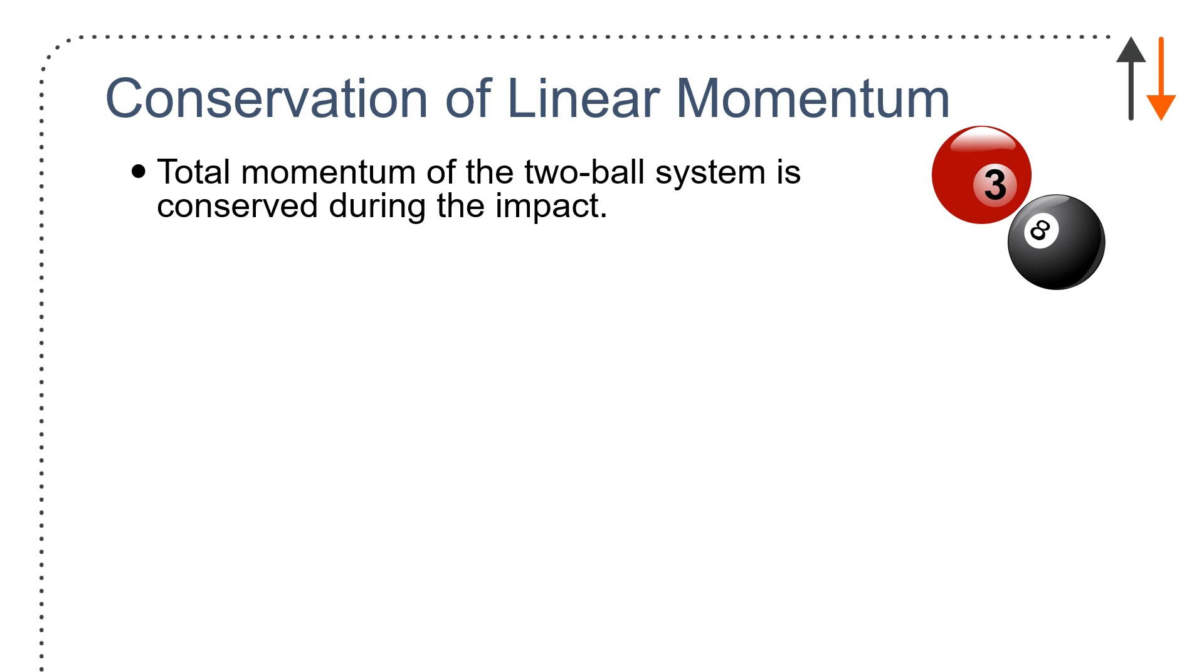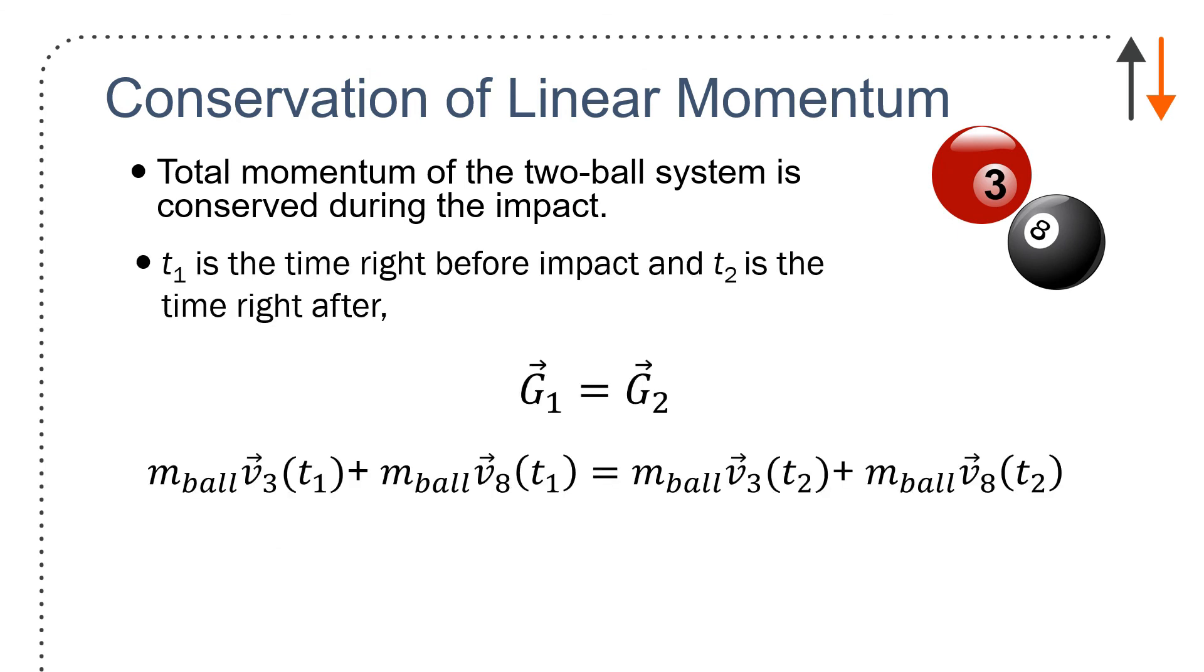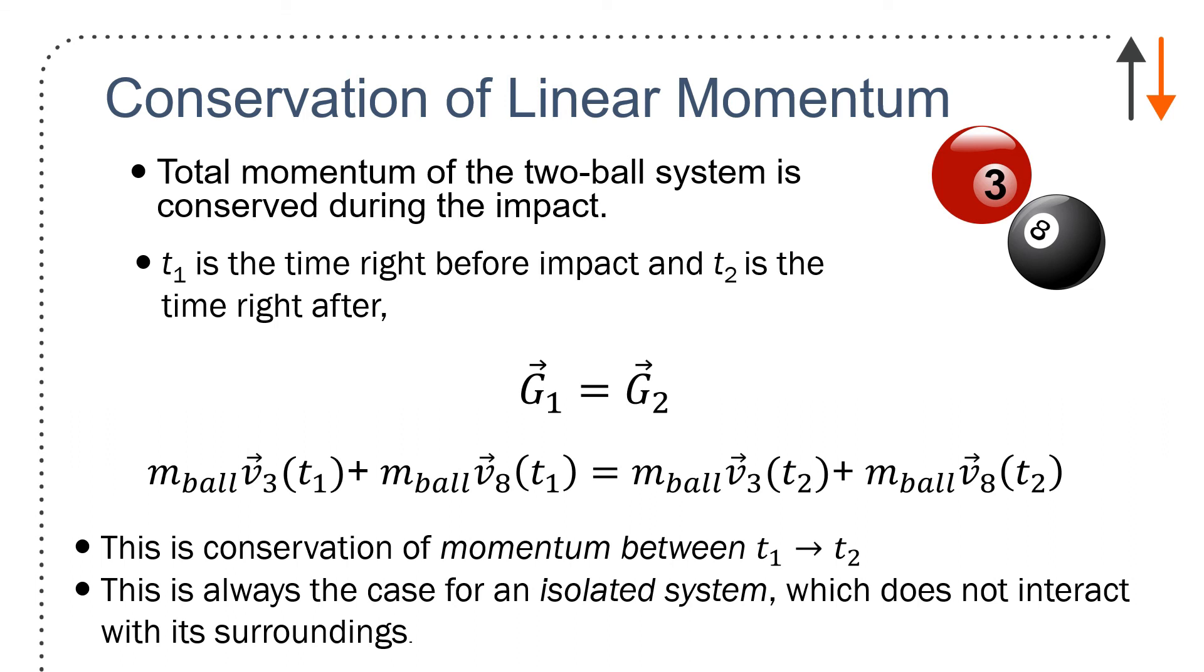And you'll see examples of these when you go into the various practical videos. Total momentum of the two-ball system is conserved during impact. T1 is the time right before, T2 is right after. So G1 equals G2. So, putting in all the terms, I can calculate everything from beginning to end. Momentum of ball 3 plus momentum of ball 8 at time 1 equals momentum of ball 3 and momentum of ball 8 at time 2. Conservation of momentum between time 1 and time 2. This is always going to be the case in an isolated system, which does not interact with its surroundings.